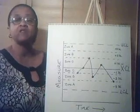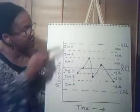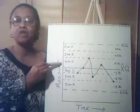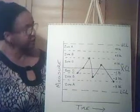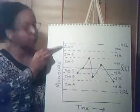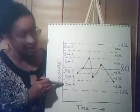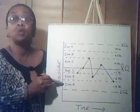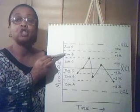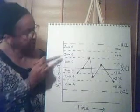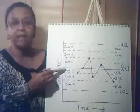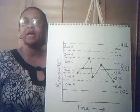divide the sections of the chart evenly between the upper control limit and your mean, and then your lower control limit and your mean. Your zones are calculated as zone A, which is your mean plus or minus three sigma. Zone B is your mean plus or minus two sigma. And zone C is your mean plus or minus one sigma.